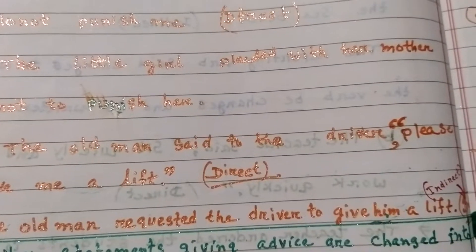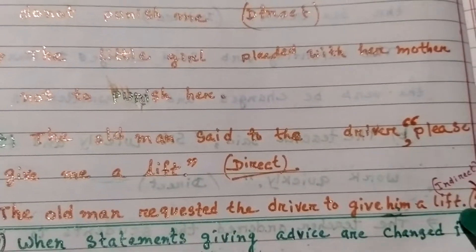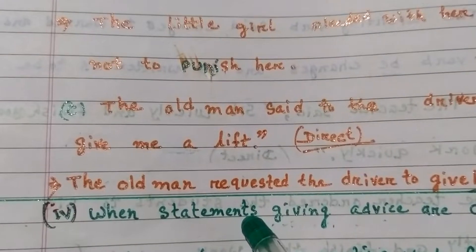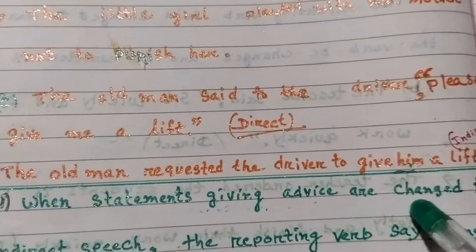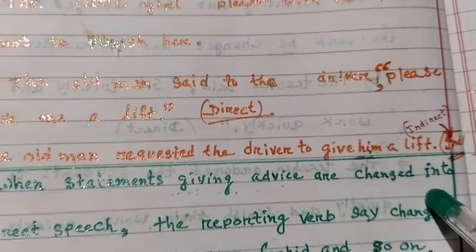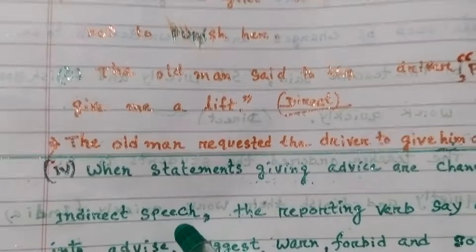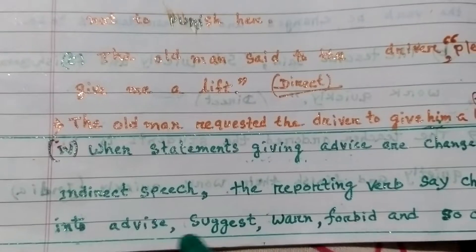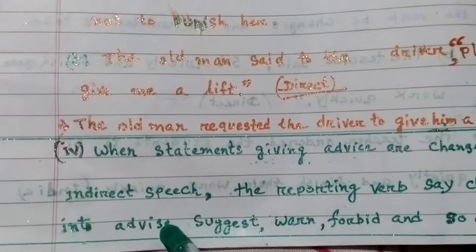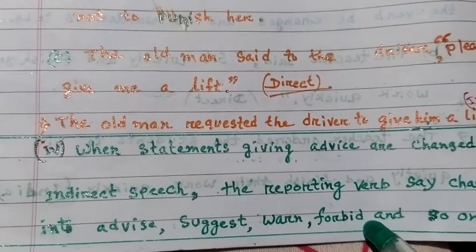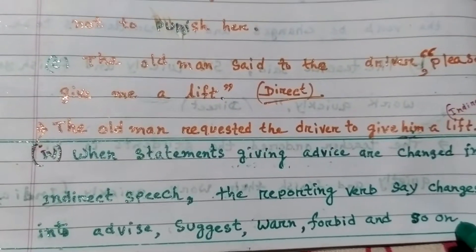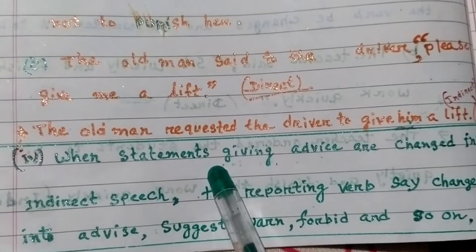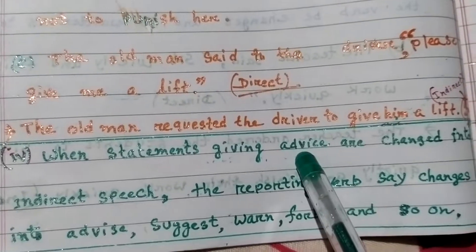Example C: Direct speech — 'The old man said to the driver, please give me a lift.' In indirect speech: 'The old man requested the driver to give him a lift.' Number four: when statements giving advice are changed into indirect speech, the reporting verb 'said' changes to advise, suggest, forbid, and so on.